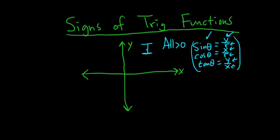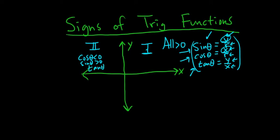In quadrant 2, you usually just memorize the signs of sine, cosine, and tangent, and then think about the reciprocals — cosecant, secant, and cotangent. Here the x is negative, so cosine of theta is negative, and sine of theta is positive. Sine is positive here because sine is y, and cosine has the x. Tangent is y divided by x, so tangent would be negative in this case.